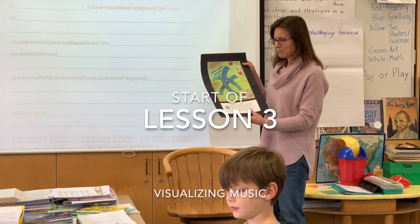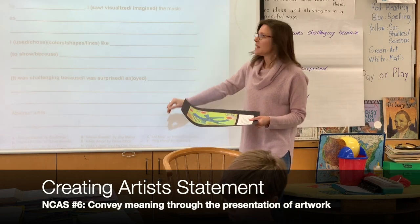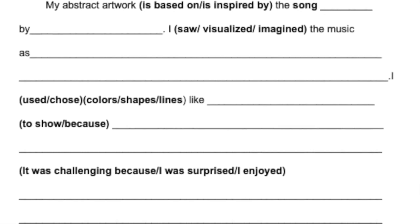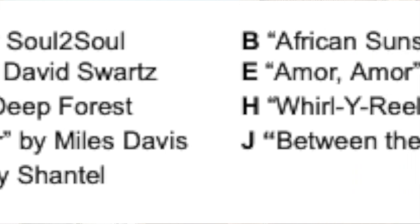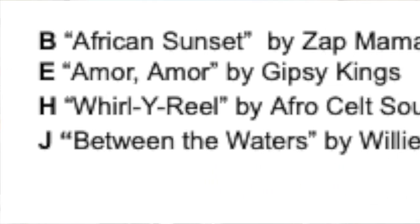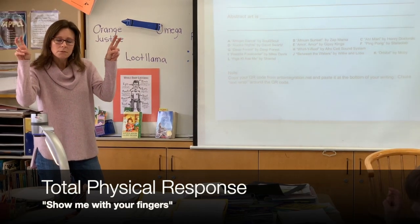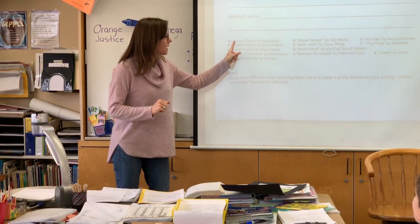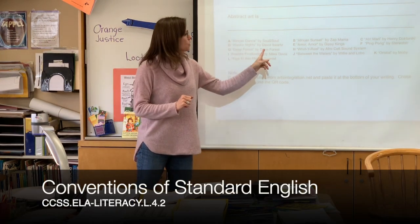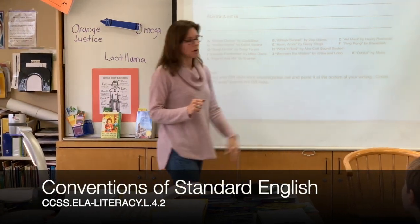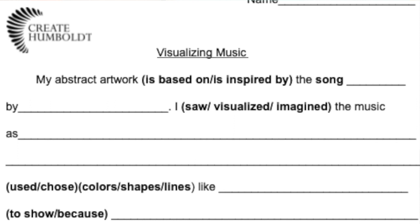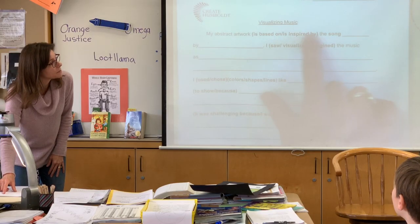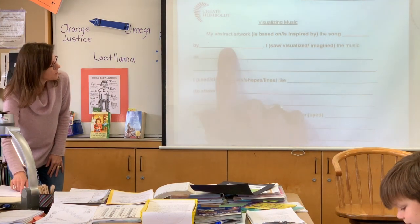Here's the next step: you're going to fill out your frame. At the bottom is a list of all the music you chose from — for example, if you chose G, it's called 'Deep Forest' by Deep Forest, and if you chose E, it was 'Amor Amor' by Jason King. A title of a song goes in quotes, and you capitalize the beginning of each word in the title. You also capitalize the artist or band name. So it would say: my abstract art is inspired by the song 'Deep Forest' by Deep Forest.